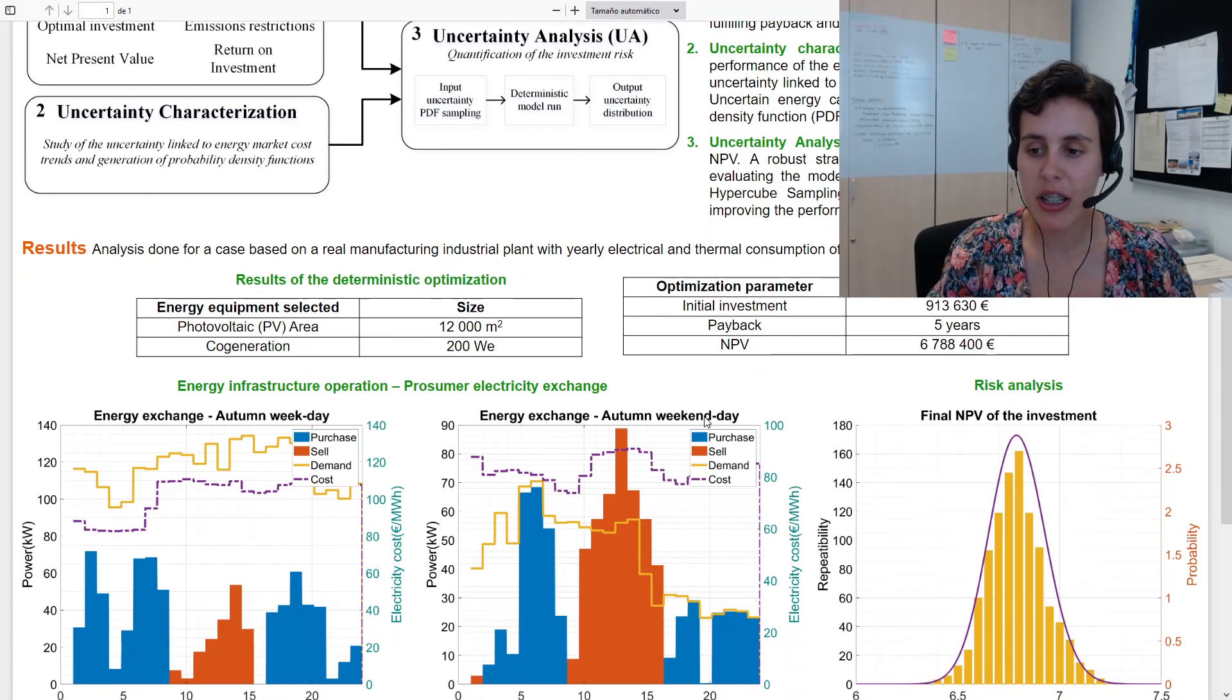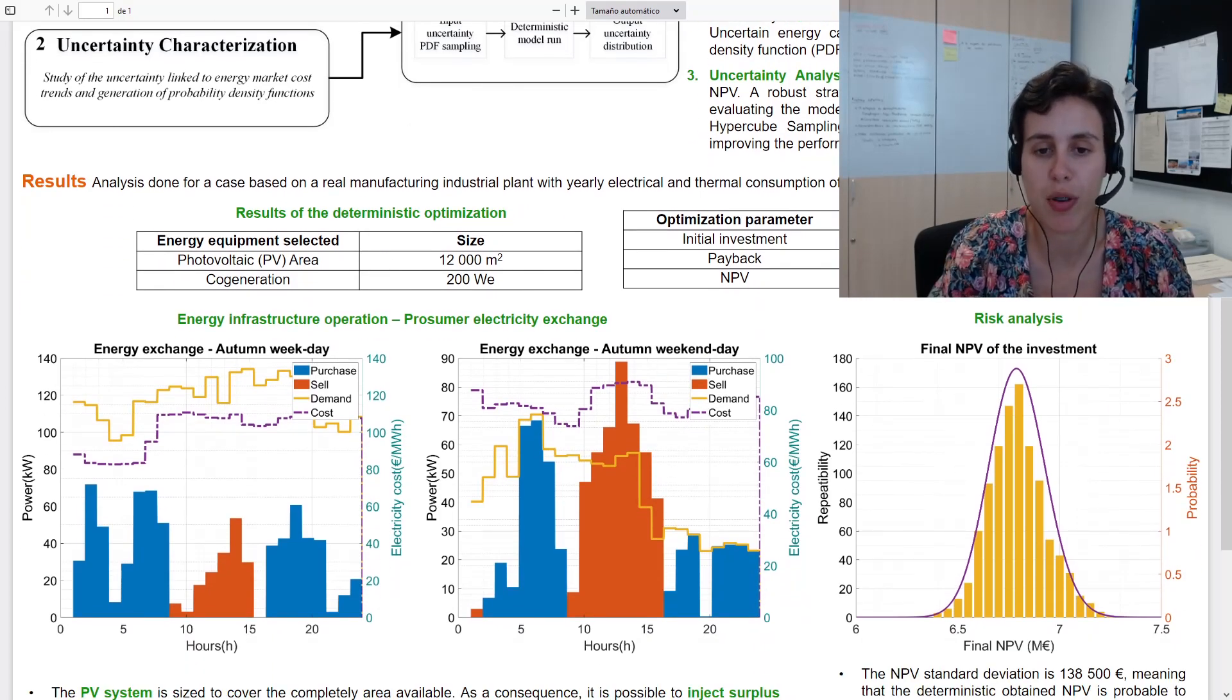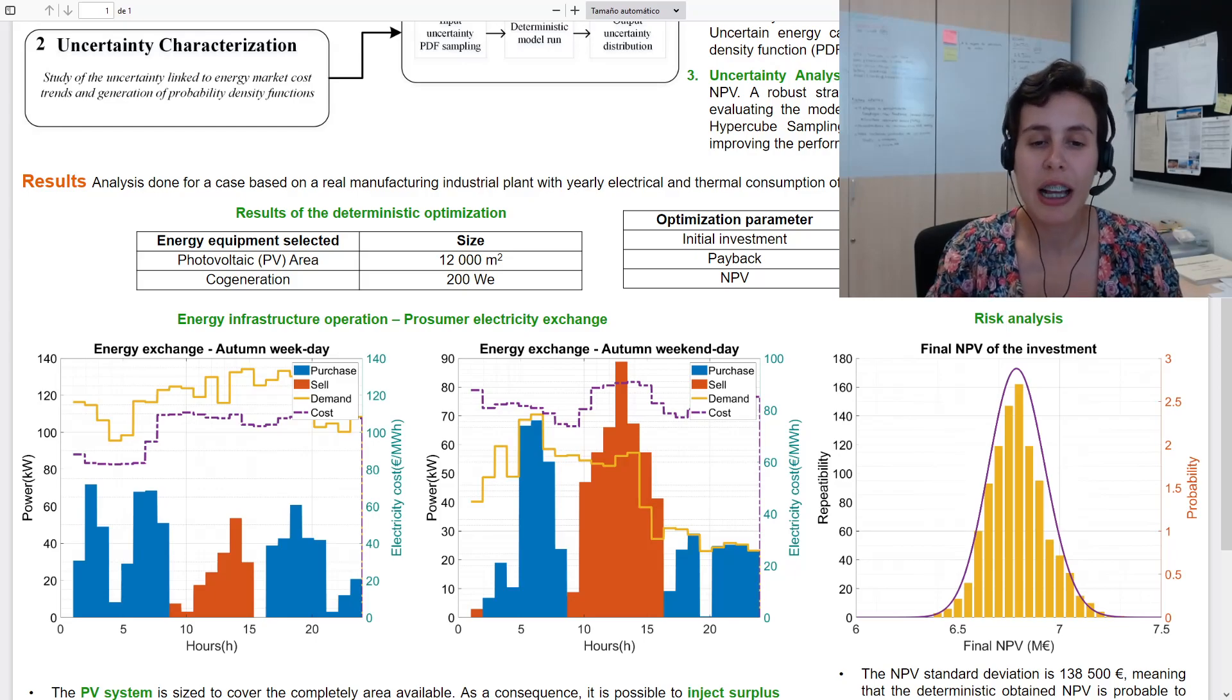In this graphics, it is possible to see the operation, the prosumer optimal operation for this equipment. As the photovoltaic system covers all the available area, an important part of the demand is covered by it, and there is also still a surplus of energy that is injected to the utility grid, obtaining a revenue.